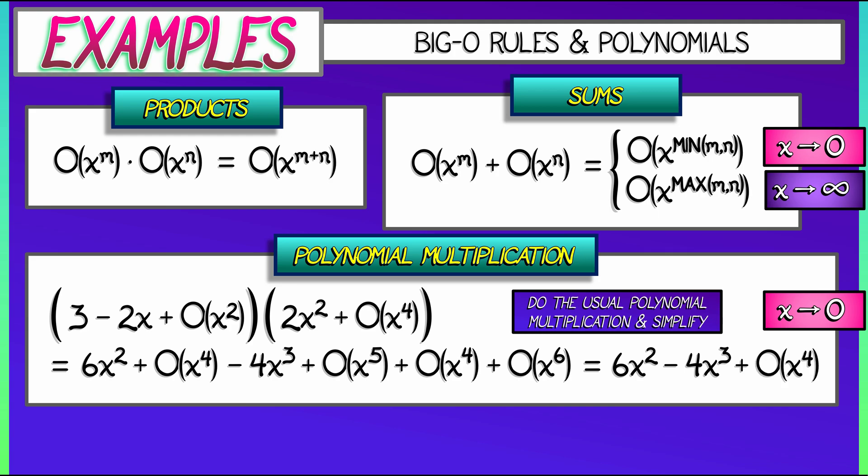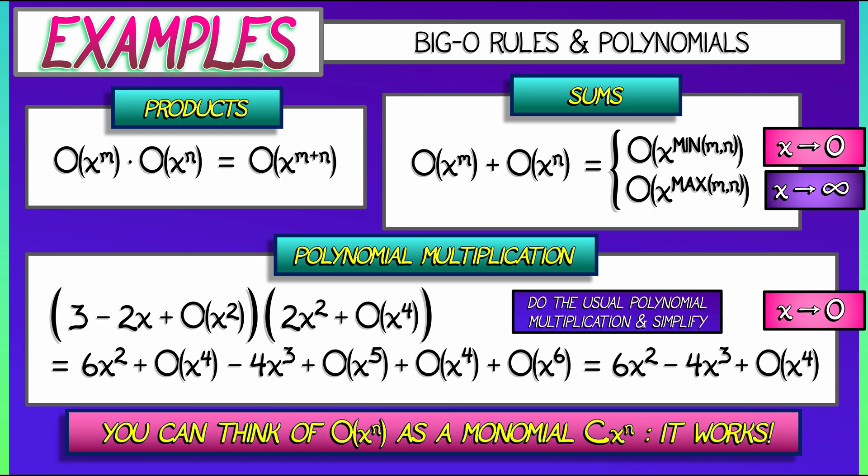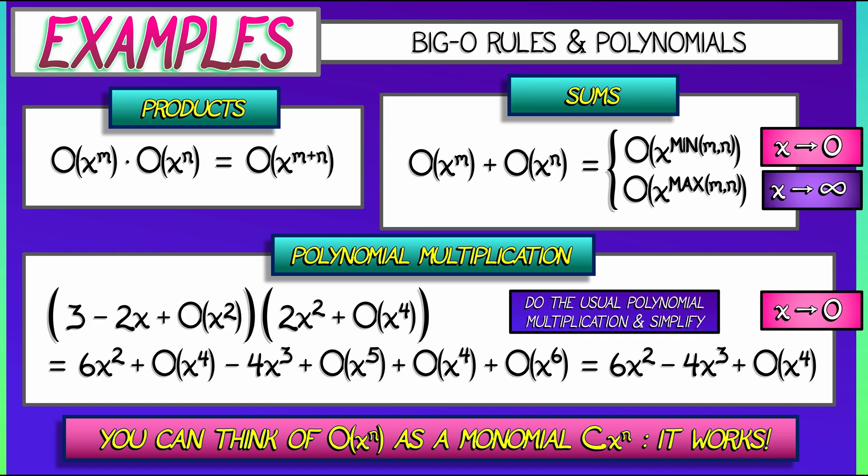If you find yourself getting lost, getting confused, not sure what to do, you can think of that Big-O of x to the n as an explicit monomial of the form some constant times x to the n. Work as if you're just doing normal polynomial multiplication. Everything will work out fine. Okay, I think we're ready for a hard example.